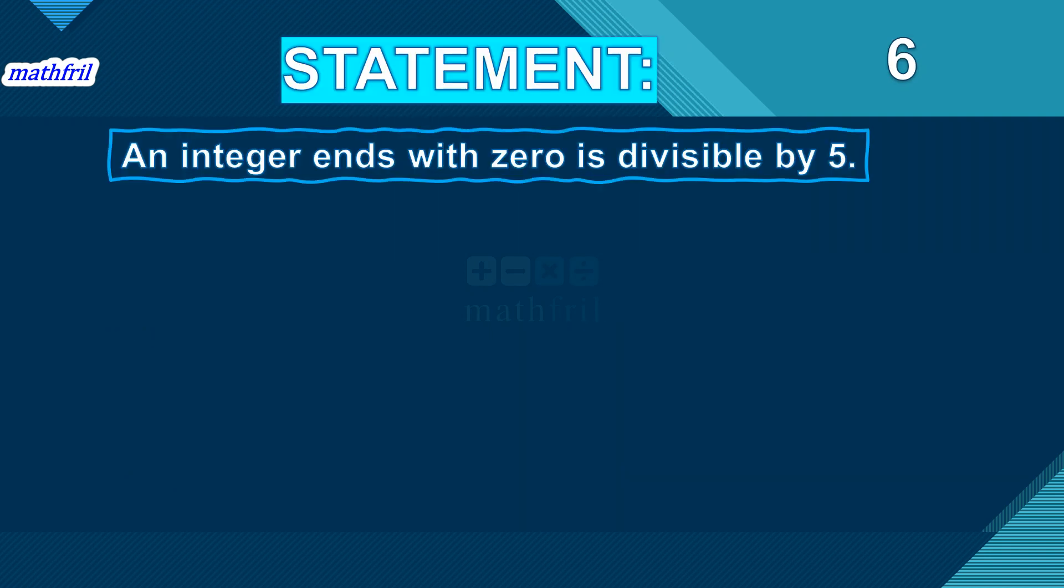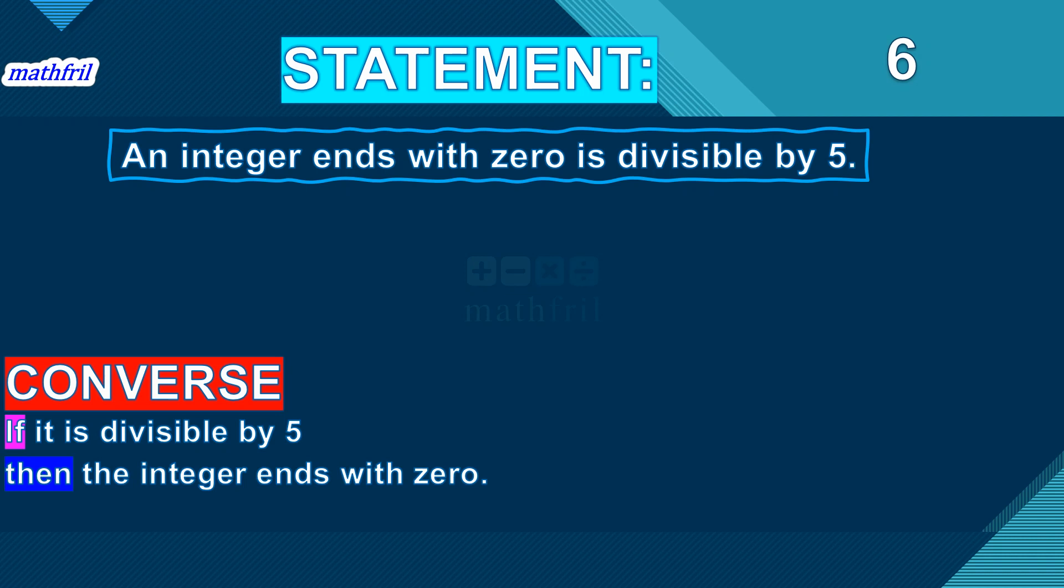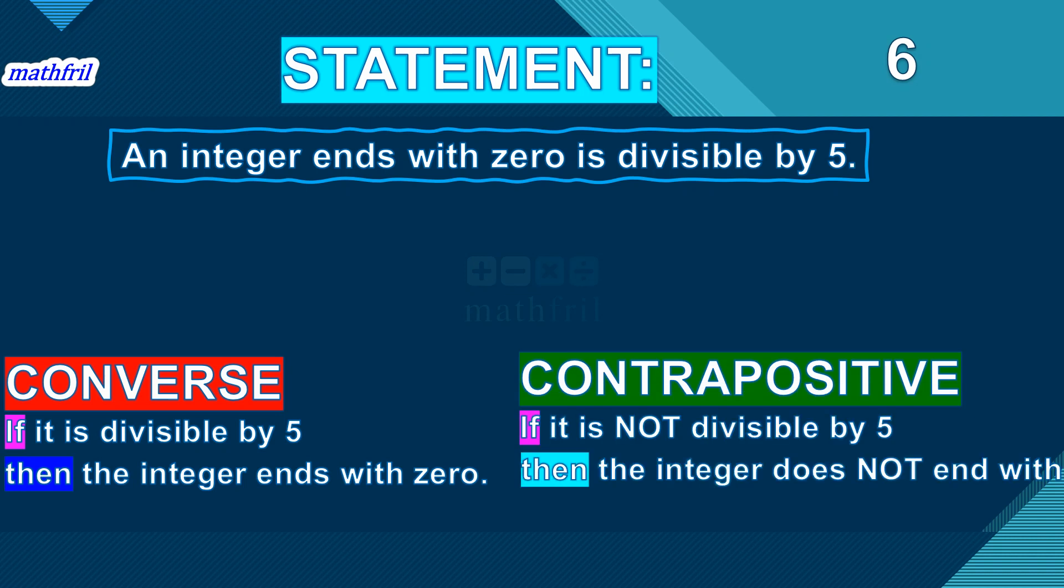And here, same with this. As you can recall, this is not a true statement with regards to converse. Because if it is divisible by five, then the integer ends with zero. Not all the time.